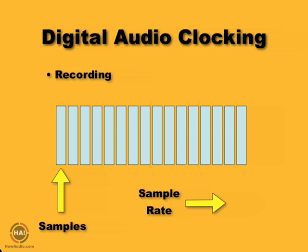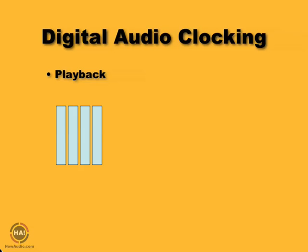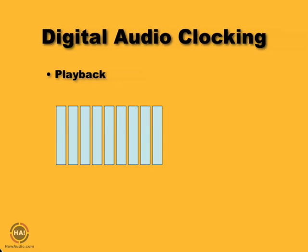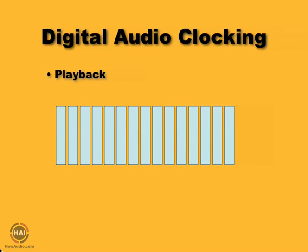Those samples are recorded and put on the hard disk. They aren't time stamped — there's no real way for the computer to know which one to play when. It just saves them in sequential order: sample number one, sample number two, sample number three, etc. When you ask to play them back, it plays them in numerical order, hopefully at the same sample rate as you recorded, so everything plays back correctly. Since the computer knows the original sample rate, it can play back at the same rate. Everything is good.